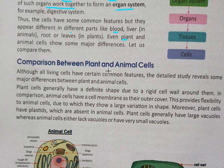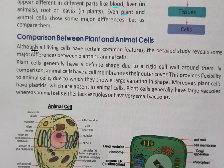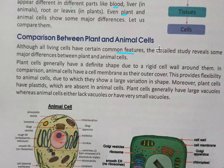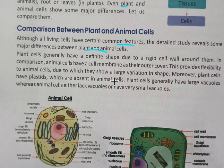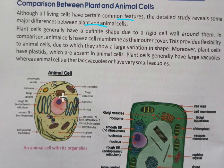Now we look at a comparison between plant and animal cells. Although all living cells have certain common features, a detailed study reveals some major differences between plant and animal cells. The diagram shows both the animal cell and the plant cell, and they are different.